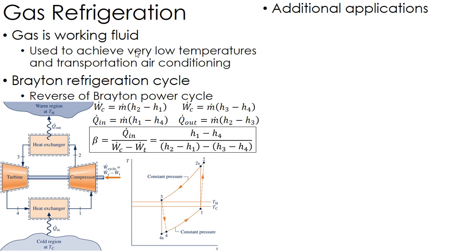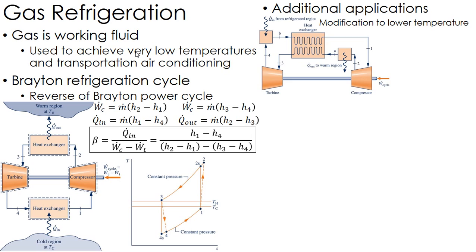You can make modifications like a regeneration type setup, which will actually help lower the temperature a little bit by pre-cooling the air before it goes into the refrigeration space. You can make modifications, but the process is the same. We did this with regeneration on the Brayton cycle — of course there we were heating it up rather than cooling it down.